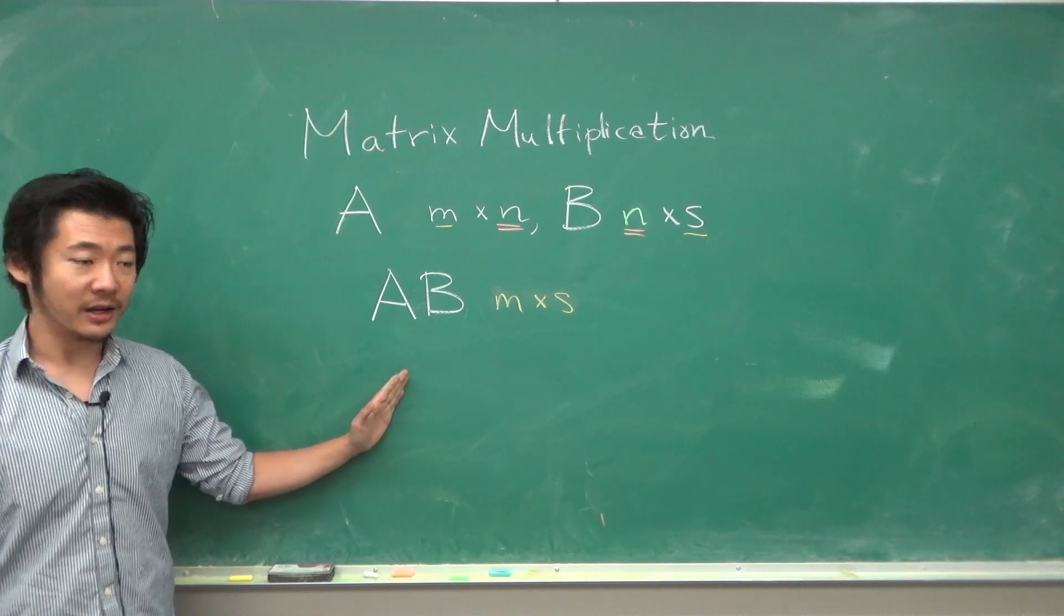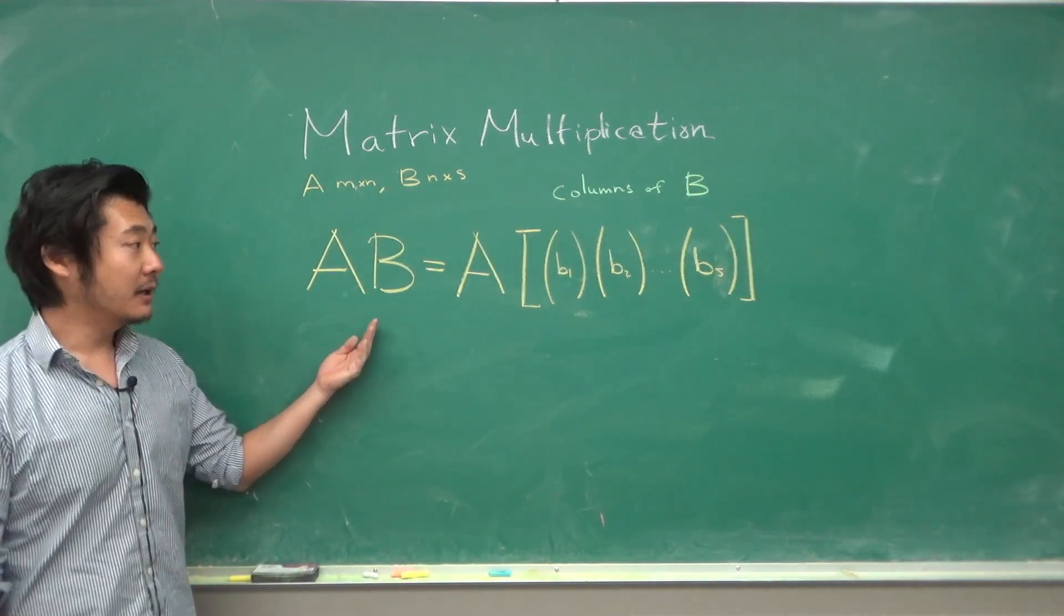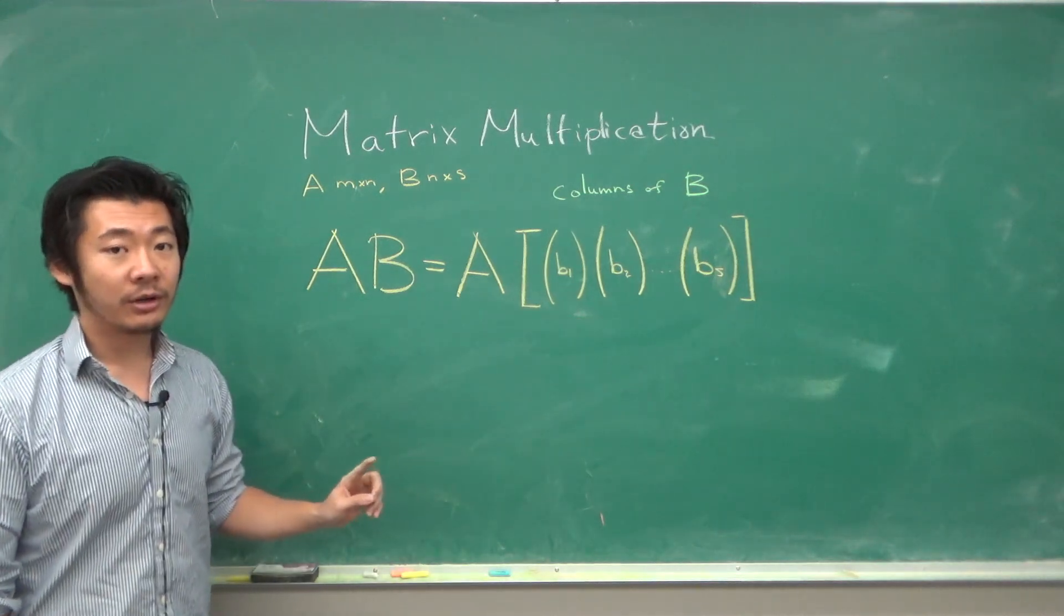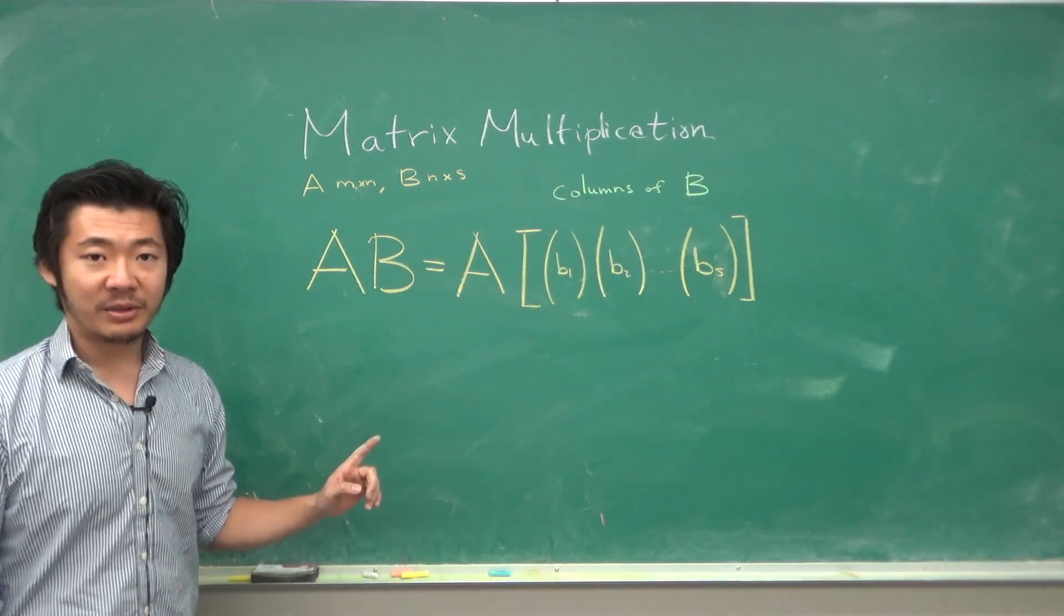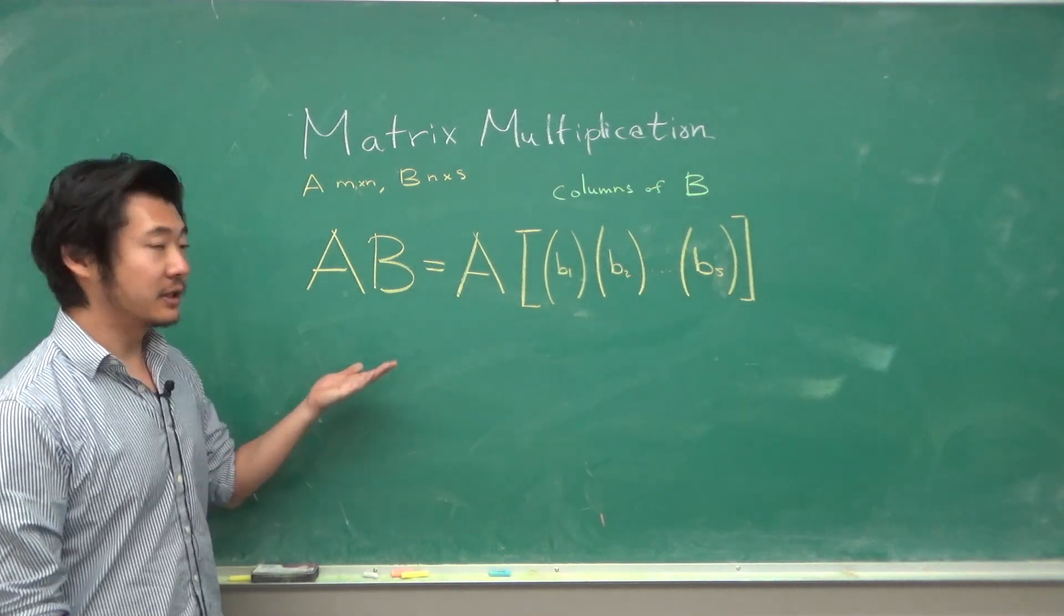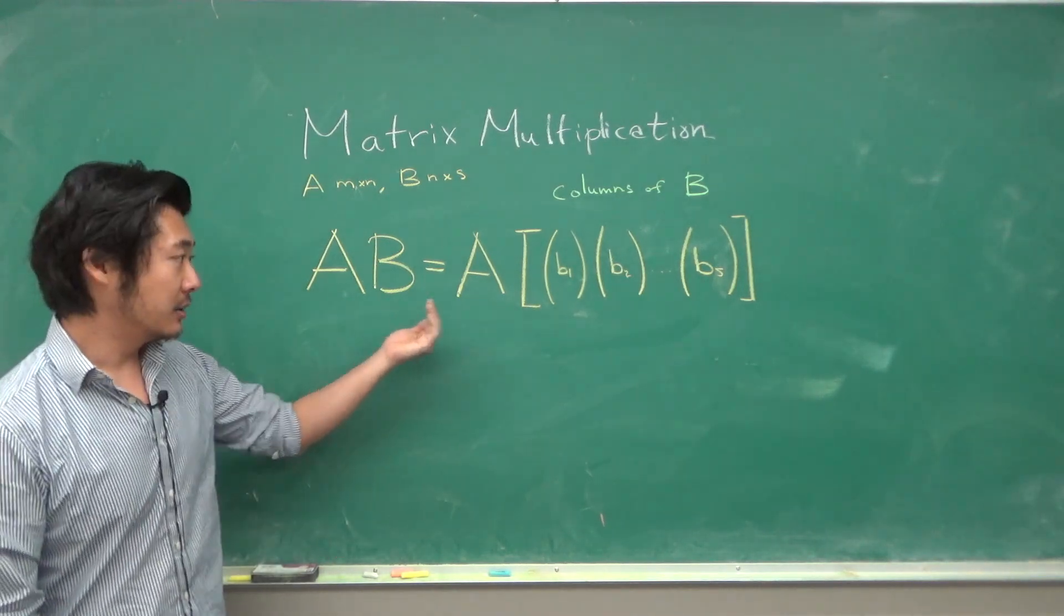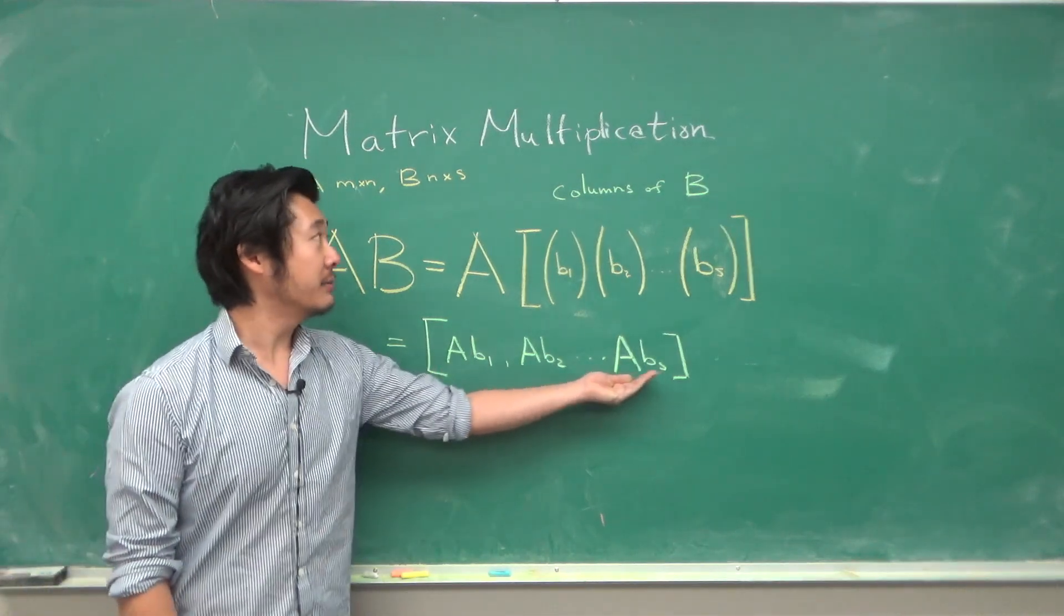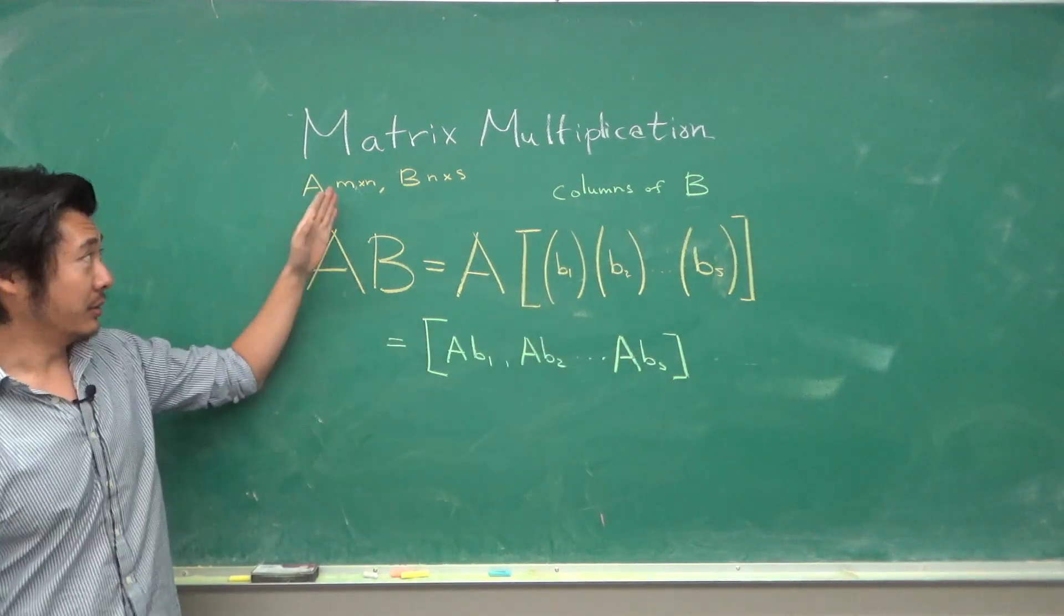How can we define a product? We first write out B as its columns. A times this column—recall that the product between a matrix and a vector was already defined, and so we just extend that definition to each column. We obtain a matrix with s columns, each of which has m rows.